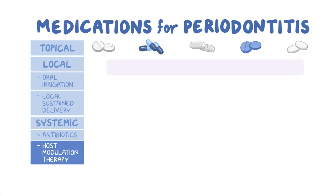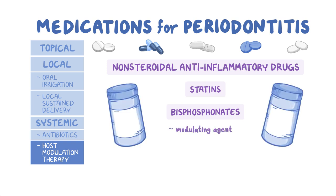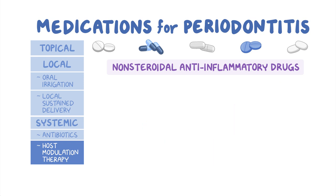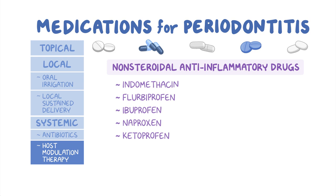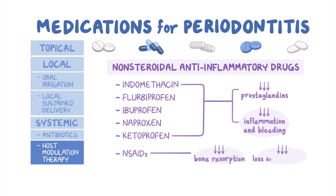Other medications include non-steroidal anti-inflammatory drugs. Statins and bisphosphonates may also act as host-modulating agents if the patient is already taking them for other health issues. However, they are not prescribed specifically to treat periodontitis. NSAIDs include medications such as indomethacin, flurbiprofen, ibuprofen, naproxen, and ketoprofen. These medications decrease the production of inflammatory mediators called prostaglandins, thereby reducing gingival inflammation and bleeding. Additionally, NSAIDs may also decrease bone resorption and inhibit the loss of attachment.